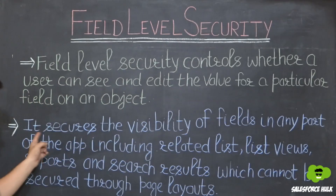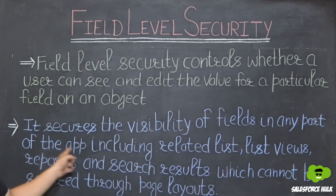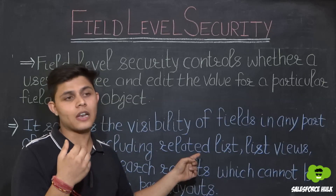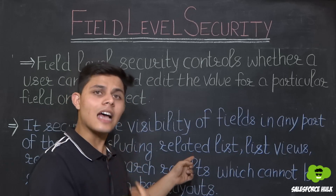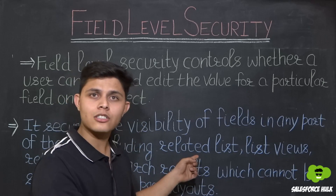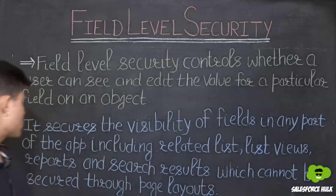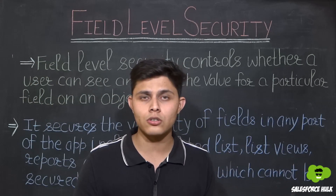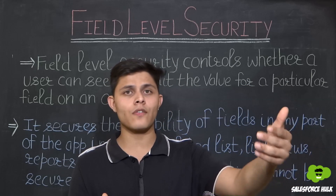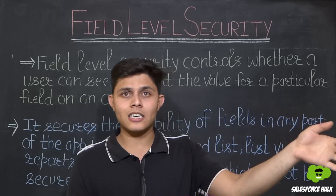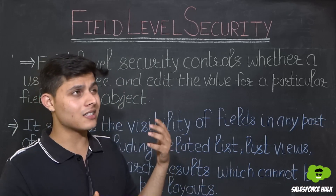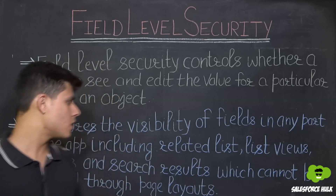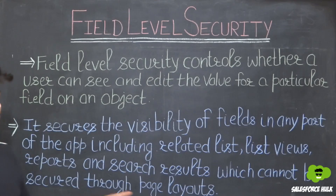Field Level Security secures the visibility of fields in any part of the app, including Related Lists. If you have not shown a field to certain users using FLS, they will not be able to see it in Related Lists, Page Layouts, List Views, or Reports. If you haven't put a field on the Page Layout, users can still see it in Reports — but by implementing FLS you will be able to hide it from Reports as well.